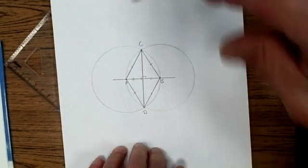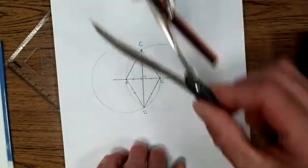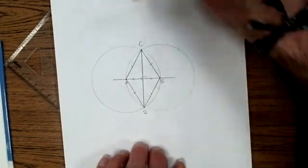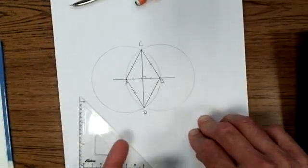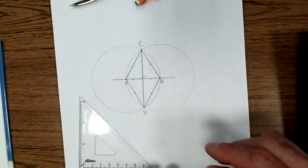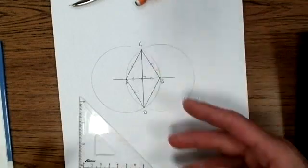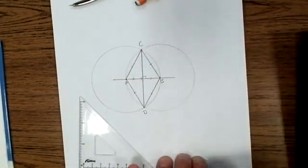So, again, things we can do with a compass and a straight edge: We can reproduce lengths with the compass. We can connect points with our straight edge. With the two of them together, we can reproduce angles, which means we can reproduce triangles, and we can make angle bisectors, and we can make bisectors of segments.